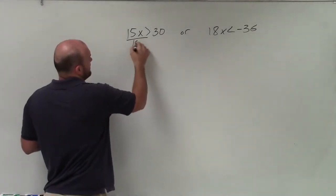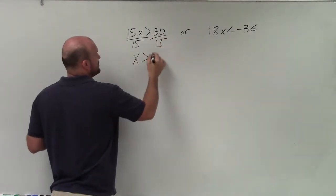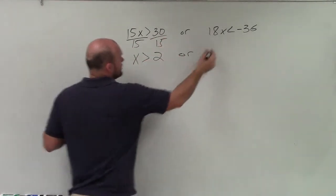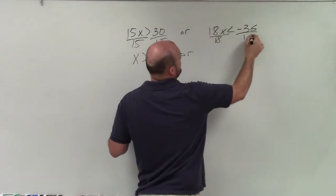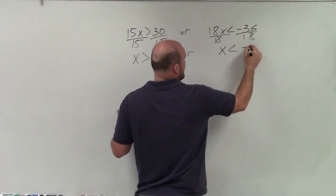So to solve for x, I just divide by 15 on both sides. So I have x is going to be greater than 2. Or here, just divide by 18, divide by 18. x has to be less than negative 2.